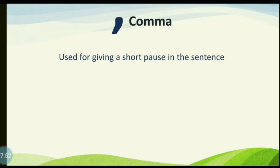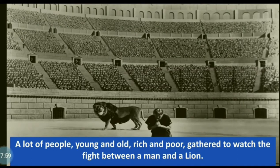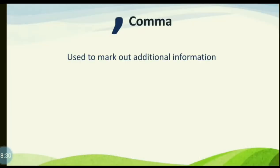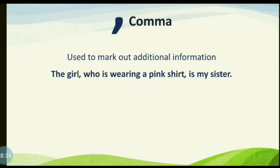Another use of the comma is to give a short pause in the sentence. For example: 'A lot of people, young and old, rich and poor, gathered to watch the fight between a man and a lion.' A comma is also used to mark out additional information, like: 'The girl, who is wearing a pink shirt, is my sister.' The phrase 'who is wearing a pink shirt' is additional information and is written between two commas.